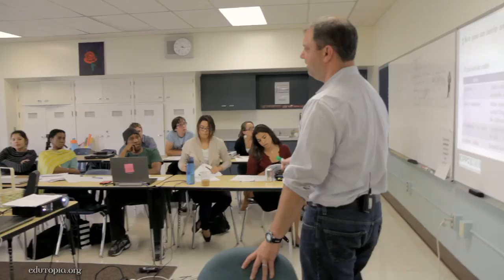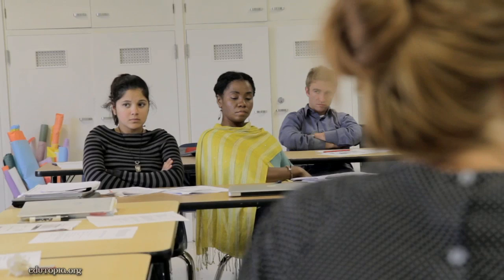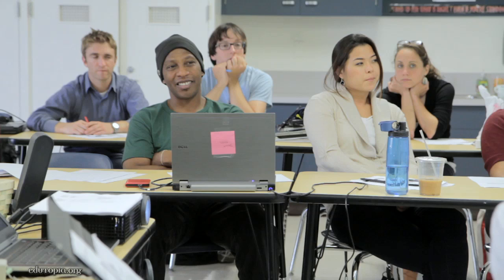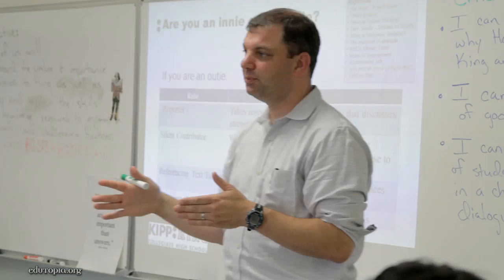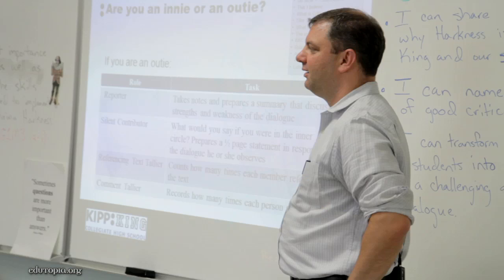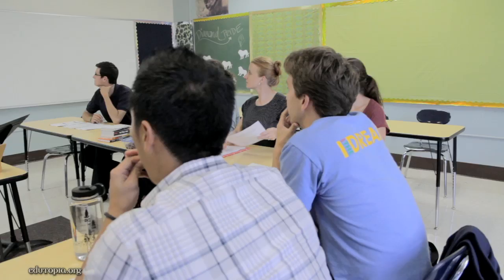They need an active role that helps them really follow what's going on. You might assign them as a reporter — and it's really interesting to have multiple reporters, because sometimes they see things differently and report out different things. Another role is a silent contributor, which I really love. They follow along as if they were in the conversation, but they're not in it. At the end, you get the chance to ask them: what would you have said?